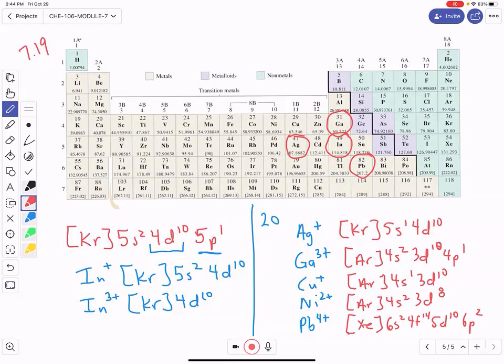So lead four plus, we're going to lose these two electrons, and we're going to lose these two electrons. Everything we have left is the full d and full f block. So this would also be pseudo noble gas.